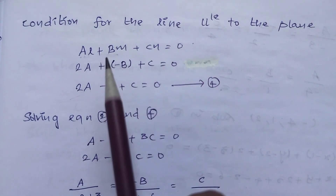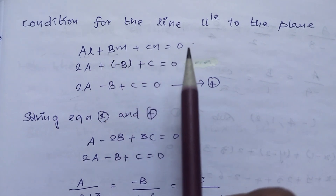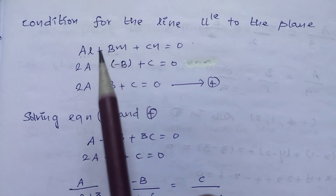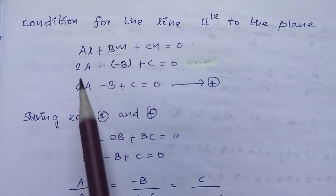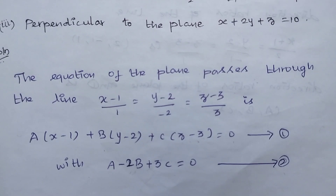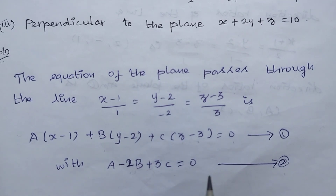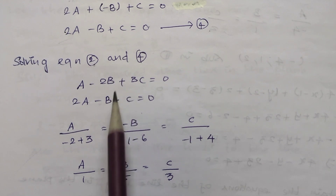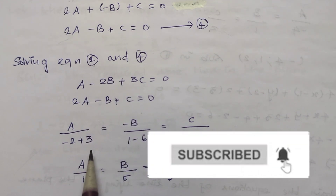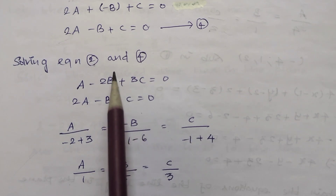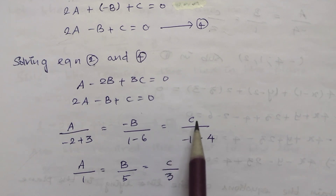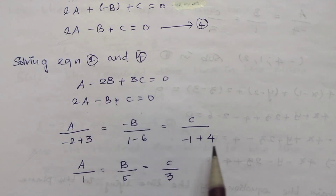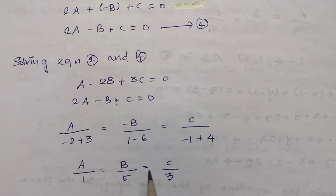Solving equations 2 and 4 using the cross-ratio: A/(-1+3) = -B/(1-6) = C/(-1+4), which gives A/1 = B/5 = C/3. So the direction ratios for Subdivision 2 are 1, 5, 3.